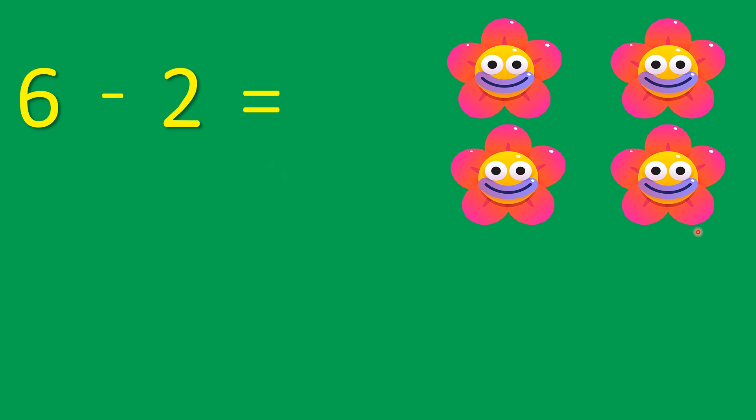1 flower disappeared, 2 flowers disappeared. How many flowers are left? 1, 2, 3, 4. 4 flowers. So we will write equals to 4. 6 minus 2 equals to 4.